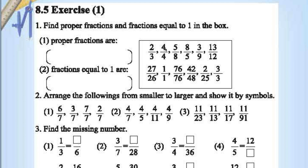4 by 4 is equal to 1, so it comes under category 2. 5 by 8 is a proper fraction. 8 by 5 is not — it is an improper fraction. 3 by 9 is also a proper fraction. 13 by 12 is an improper fraction. 27 by 26 is improper.